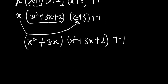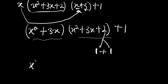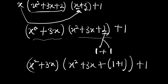Now we need to make sure the terms align. We split the constant 2 into 1 plus 1, so we can write this as (x squared plus 3x) times (x squared plus 3x), plus 1 plus 1, plus 1.